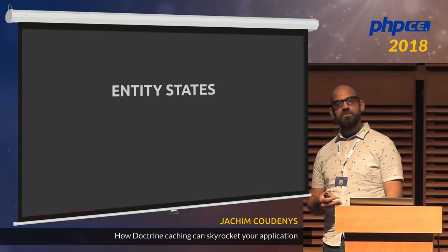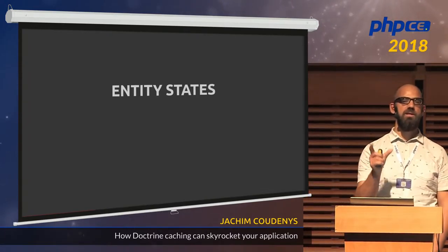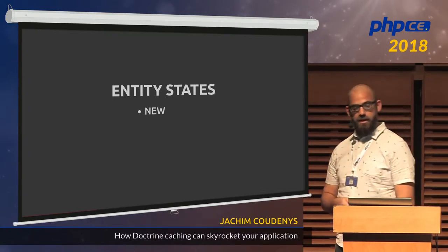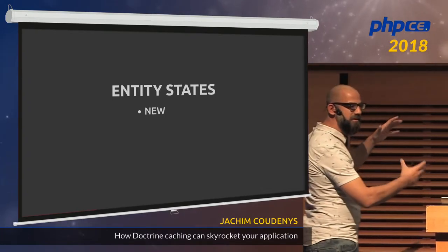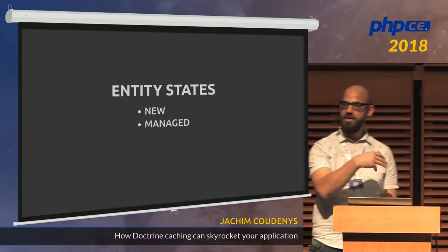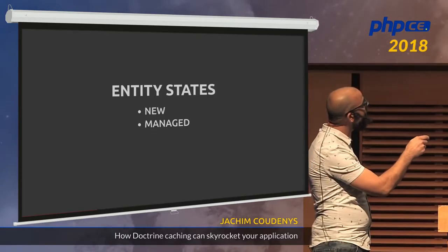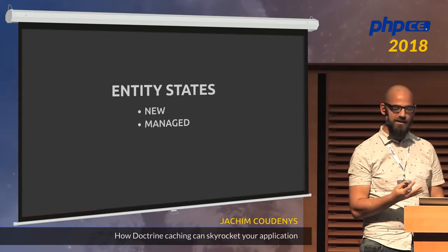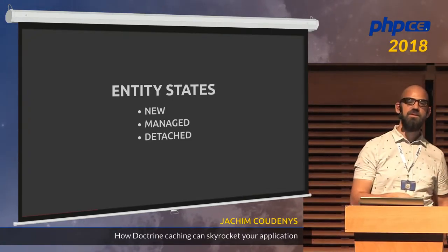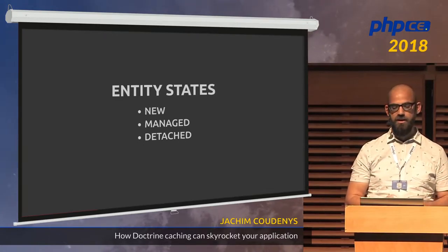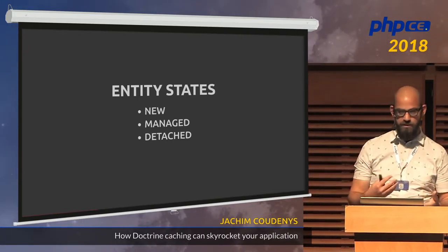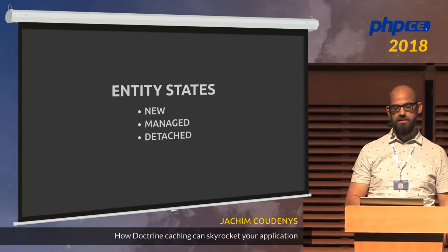You can also detach an entity — sometimes by accident, like when you serialize an entity and deserialize it, the entity manager won't know that object exists. Or you can detach it explicitly for performance reasons. The last state is 'removed', which marks an entity to be deleted from the database in the next transaction. When data is queried from the database, it has to get back into the identity map, and the identity map needs to hydrate objects — raw data has to be hydrated into an object representation, which is important for performance.